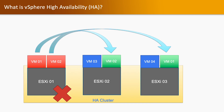What is vSphere HA? We have ESXi hosts on the bottom layer, and if any ESXi host goes down, what will happen to the virtual machines running on that particular ESXi host? vSphere HA will help by migrating all the virtual machines running on that ESXi host to another working ESXi host, providing availability for the virtual machines.